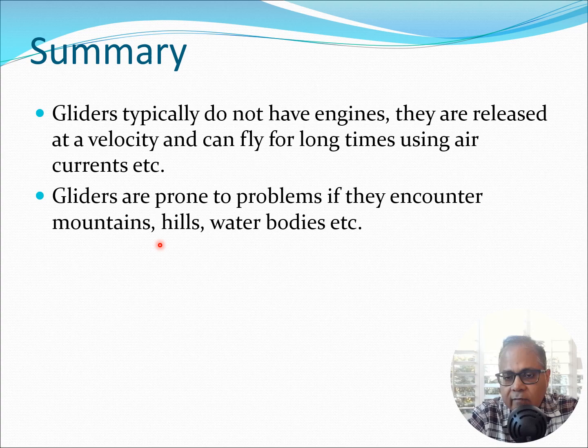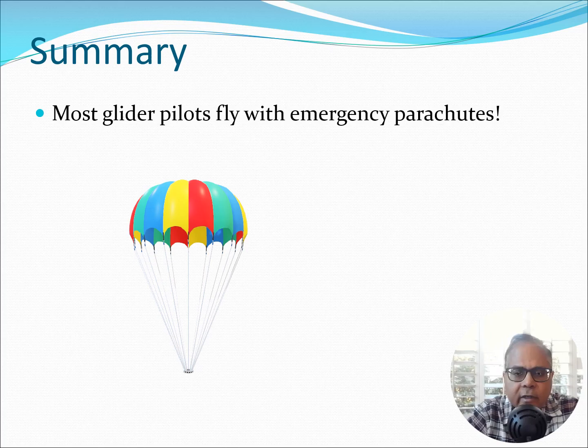But do remember that gliders are prone to certain problems. For example if they encounter mountains, hills, large water bodies such as lakes, rivers and even the sea they may be in big trouble because they do not have power. So they may not have control about where they are going to land. So one of the things which is often done in gliders is that most glider pilots fly with emergency parachutes. This is very important because most of the time glider flight is pretty safe but in case they have problems there are these parachutes which they can use to bail out and let the glider seek its own destination.